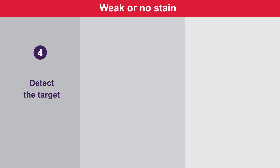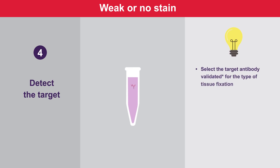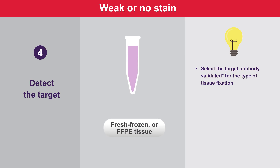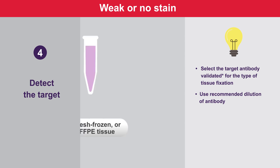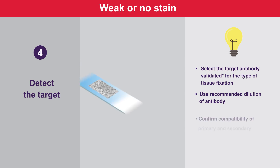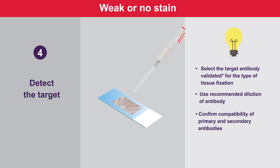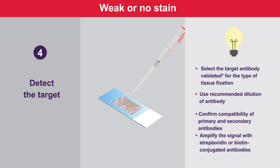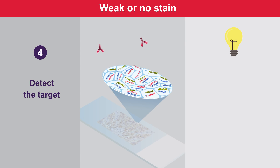For the target detection step, make sure the antibodies are suitable for the type of IHC to be performed, whether fresh frozen or formalin-fixed paraffin embedded, and follow the dilution recommendations. Confirm compatibility of primary and secondary antibodies. Amplify the signal if using a biotin-conjugated secondary antibody and a conjugated streptavidin. Troubleshoot concentration changes and check signal strength.